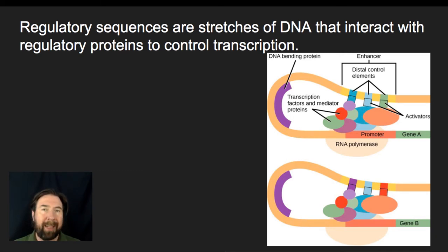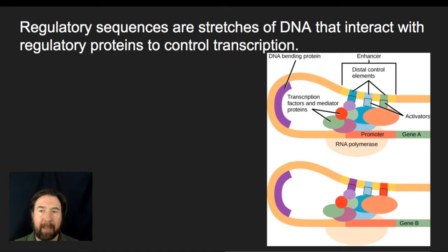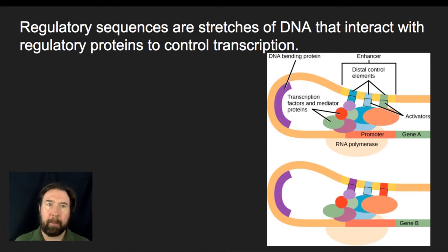Gene regulation allows cells to make the right proteins in the right tissues at the right time, and that leads to cells behaving appropriately for their specific tissue type.